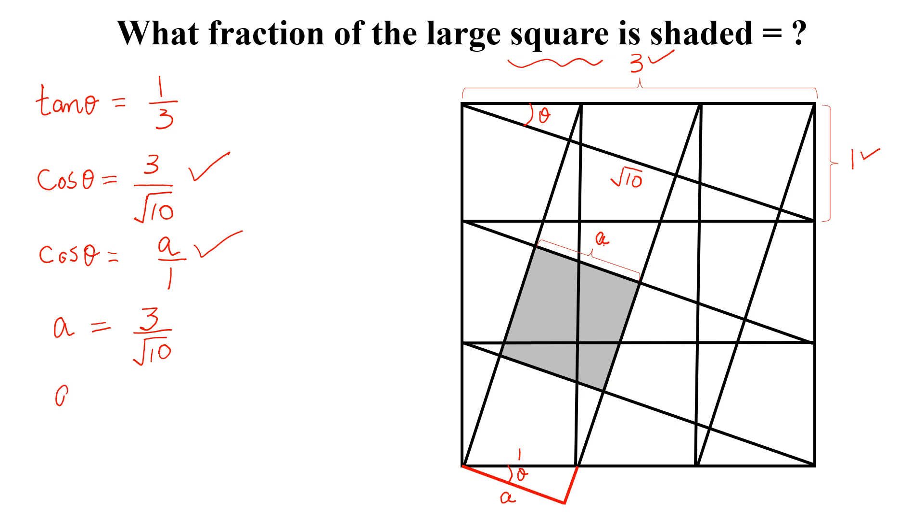Now the shaded area will be equal to A square, so A square equal to 9 divided by 10.